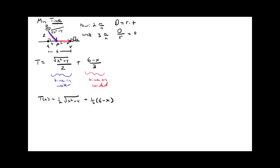I like to establish an interval for optimization problems. What can x be? Well, x represents the distance from A to P. It could be zero — meaning row straight across — or as large as six, meaning row directly to the village. So x is on the closed interval [0, 6]. This is a continuous function on a closed interval, which is good news.